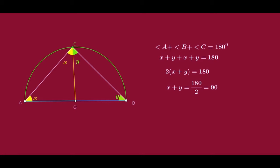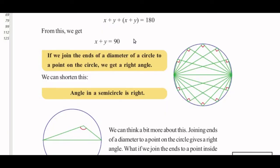The angle made by a point C on a semicircle with the end points of the diameter is always a right angle. In short: the angle in a semicircle is always 90 degrees. If we join the ends of a diameter of a circle to a point on the circle, we always get a right angle.